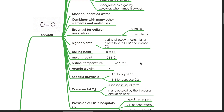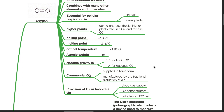Physical properties: boiling point negative 183 degrees Celsius, melting point negative 218 degrees Celsius, critical temperature at negative 118 degrees Celsius, atomic weight of 16, and specific gravity is 1.1 for liquid oxygen and 1.4 for gaseous oxygen.